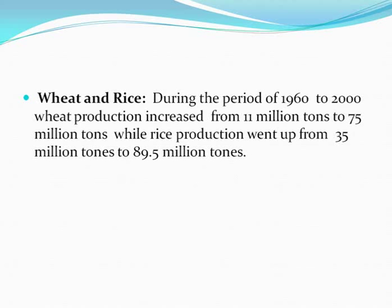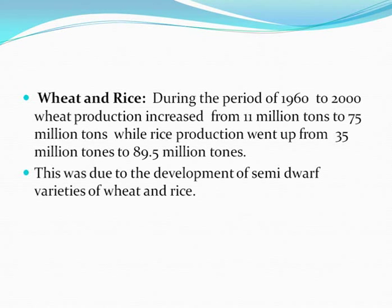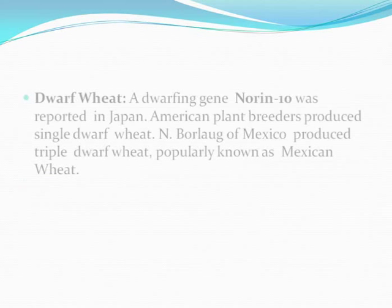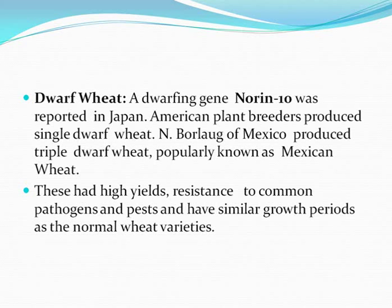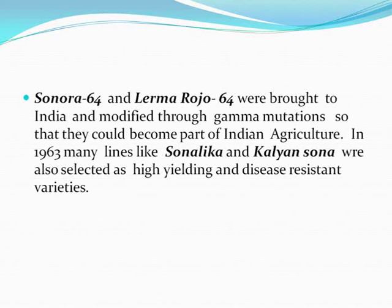Wheat and rice: during the period of 1960 to 2000, wheat production increased from 11 million tons to 75 million tons, while rice production went up from 35 million tons to 89.5 million tons. This was due to the development of semi-dwarf varieties. A dwarfing gene, Norin-10, was reported in Japan. American plant breeders produced single-dwarf wheat; N. Borlaug of Mexico produced triple-dwarf wheat, popularly known as Mexican wheat, which had high yields, resistance to common pathogens and pests, and a similar growth period as normal wheat. Sonora 64 and Lerma Rojo 64 were brought to India and modified through gamma mutations to suit Indian agriculture.